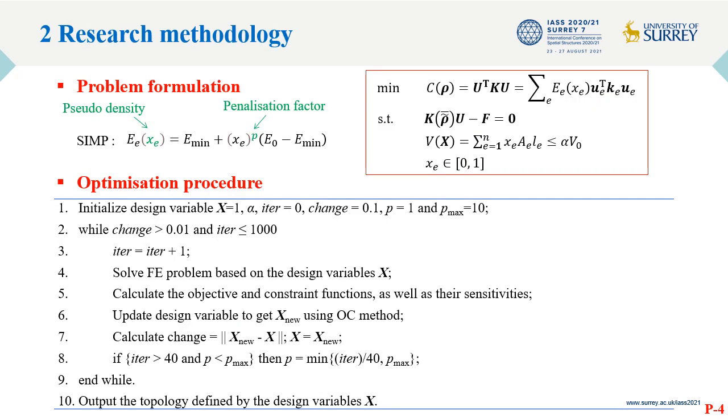We adopt a density-based approach for topology optimization of gridshells and apply these methods to identify the configuration paths for second layer grid addition. The design variable is the pseudo-densities of the element, and it is used to interpolate the element material stiffness based on the SIMP approach.